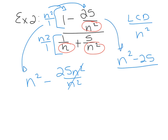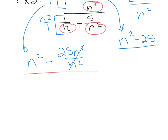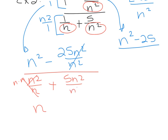For the denominator: multiplying N squared over 1 times 1/N gives N squared over N. Since N squared is N times N, one of those N's reduces, leaving just N. Then distributing times 5/N squared gives 5N squared over N squared — plus sign — and those N squareds reduce, so we get N plus 5.